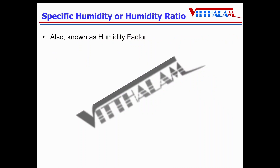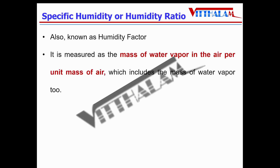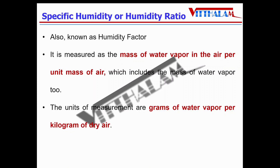Then there is specific humidity, or humidity ratio, also known as the humidity factor. It is measured as the mass of water vapor in the air per unit mass of air, which includes the mass of water vapor too. The units of measurement are grams of water vapor per kilogram of dry air.